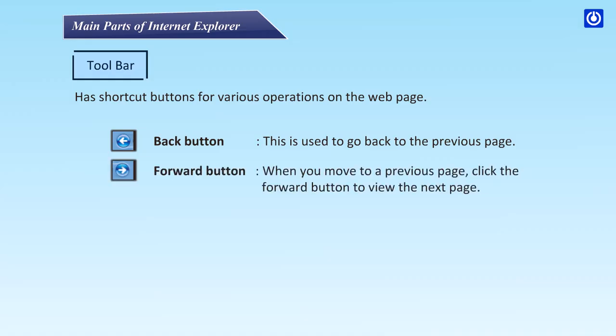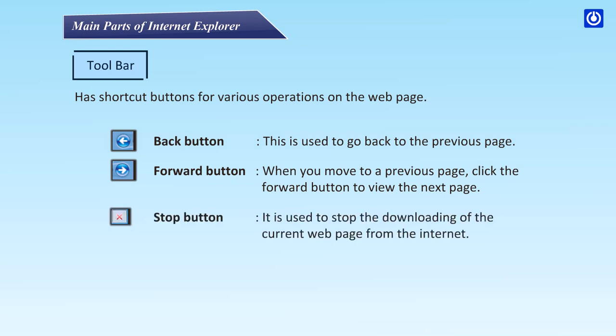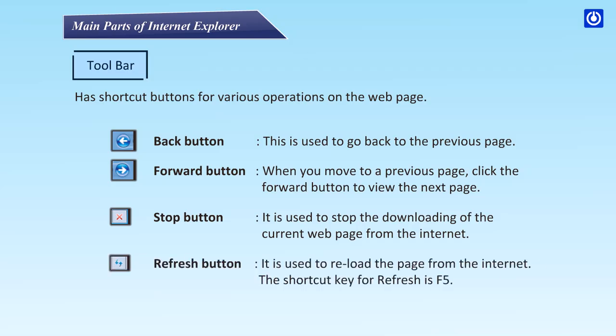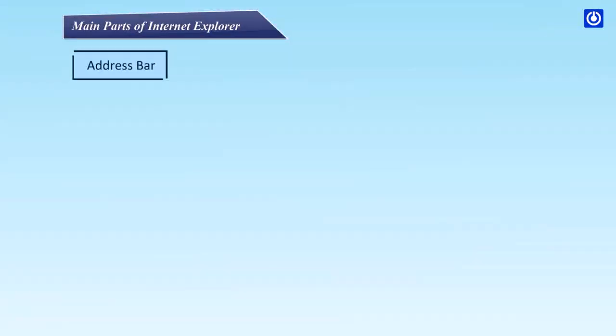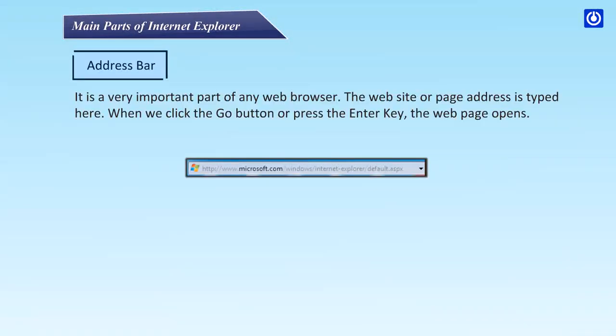The forward button is used to view the next page when you have moved back to a previous page. The stop button is used to stop the downloading of the current web page from the internet. The refresh button is used to reload the page from the internet; the shortcut key for refresh is F5.